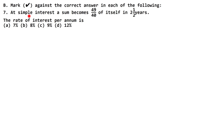In this question, at simple interest, a sum becomes 49 upon 40 of itself. The sum will be 49 upon 40 of itself in 2 whole 1 upon 2 years. The rate of interest per annum is what we need to find.